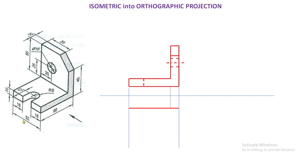If it is parallel to XY, this 52mm becomes perpendicular to the XY reference line after rotating 90 degrees. So this height is 52mm — you can see from here, this is the 52mm height. Complete this, and again the same thickness.